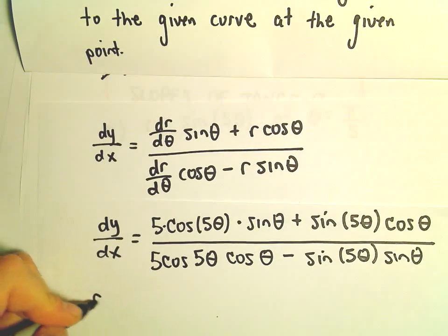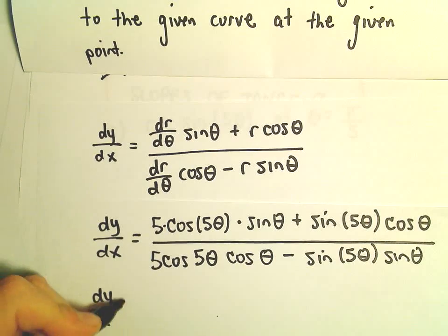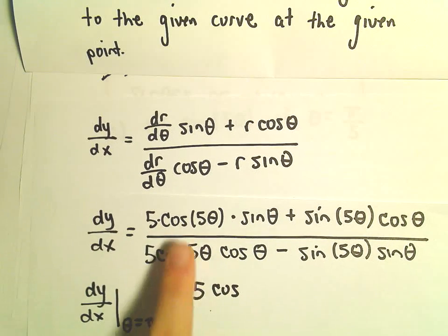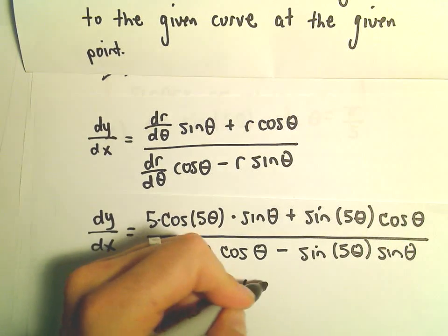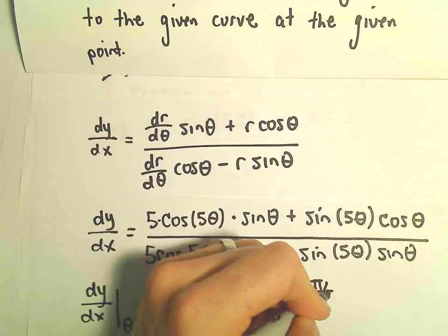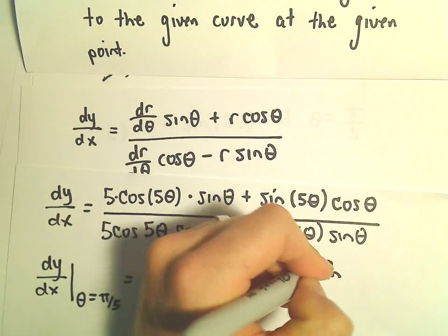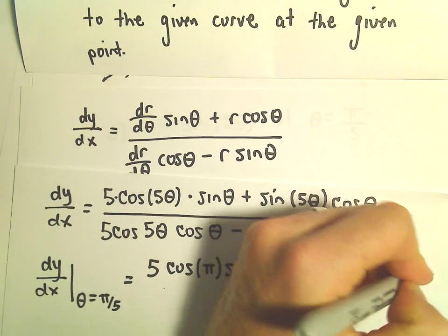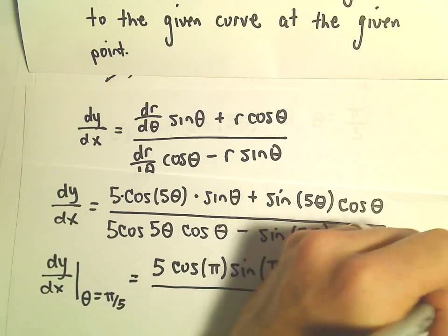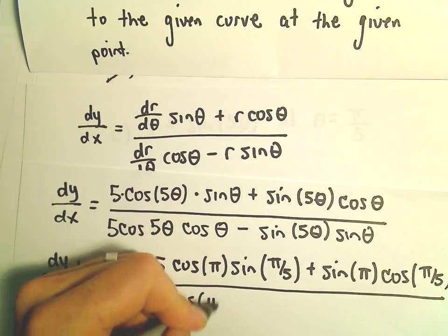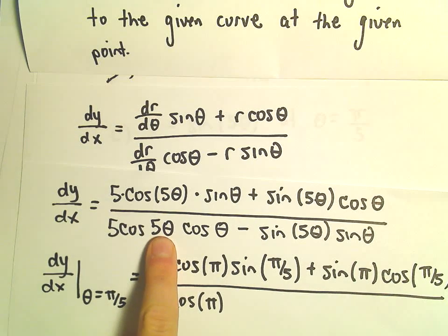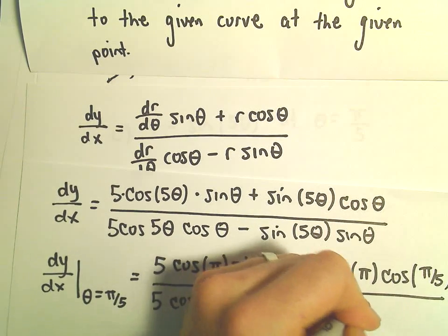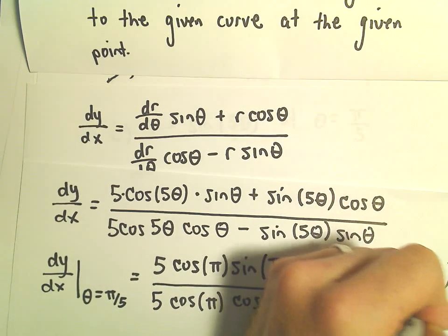A couple of these values you would need a calculator for. All we have to do is plug in θ equals π over 5. So that gives us 5 times π/5, which leaves us with cosine of π, times sine of π/5, plus sine of π times cosine of π/5. In the denominator, we have 5 times cosine of π times cosine of π/5, minus sine of π times sine of π/5.